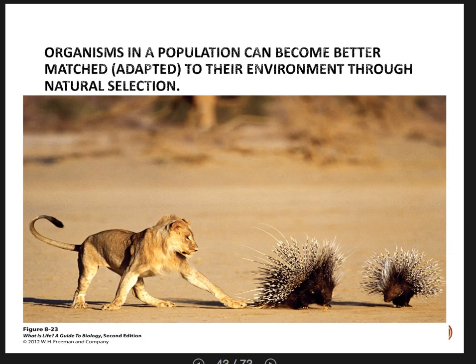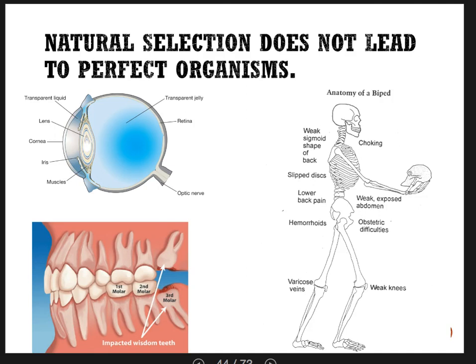You might think that with all this adaptation and natural selection, you'd eventually evolve a perfect organism — but there is no such thing. Natural selection does not lead to perfect organisms. I'm going to walk through examples in humans of how the human body is quite far from perfect. Let's start with the eyeball.